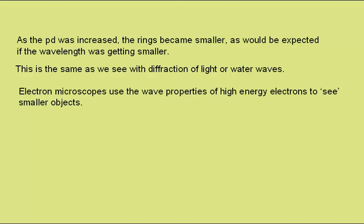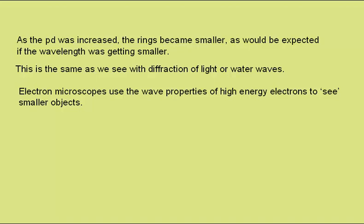Electron microscopes use the wave properties of high energy electrons to see smaller objects. Waves cannot resolve anything smaller than their wavelength. And as electron waves can have smaller wavelengths than visible light, they can provide images of smaller objects.